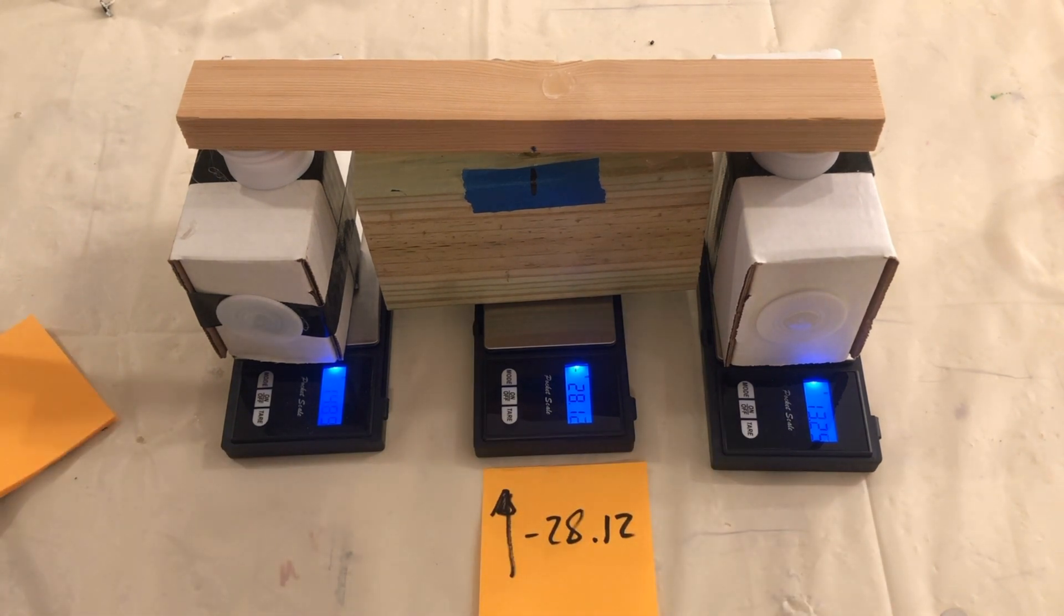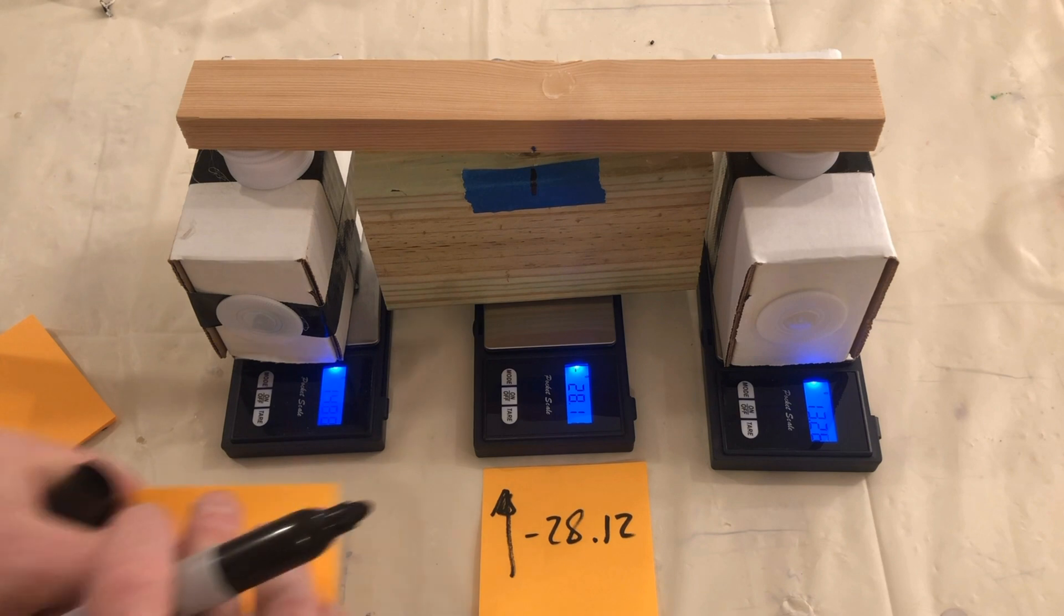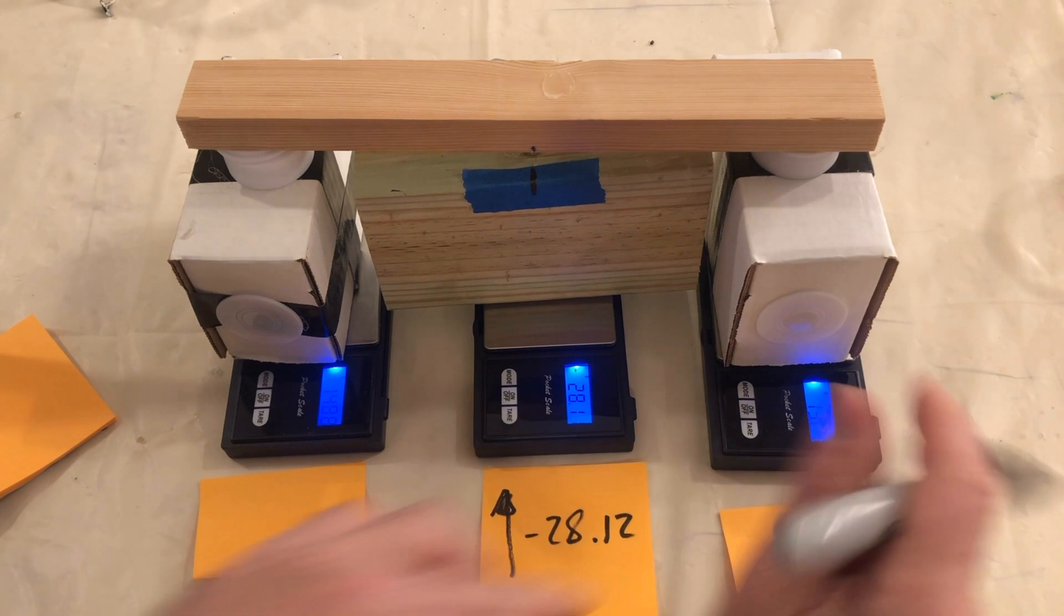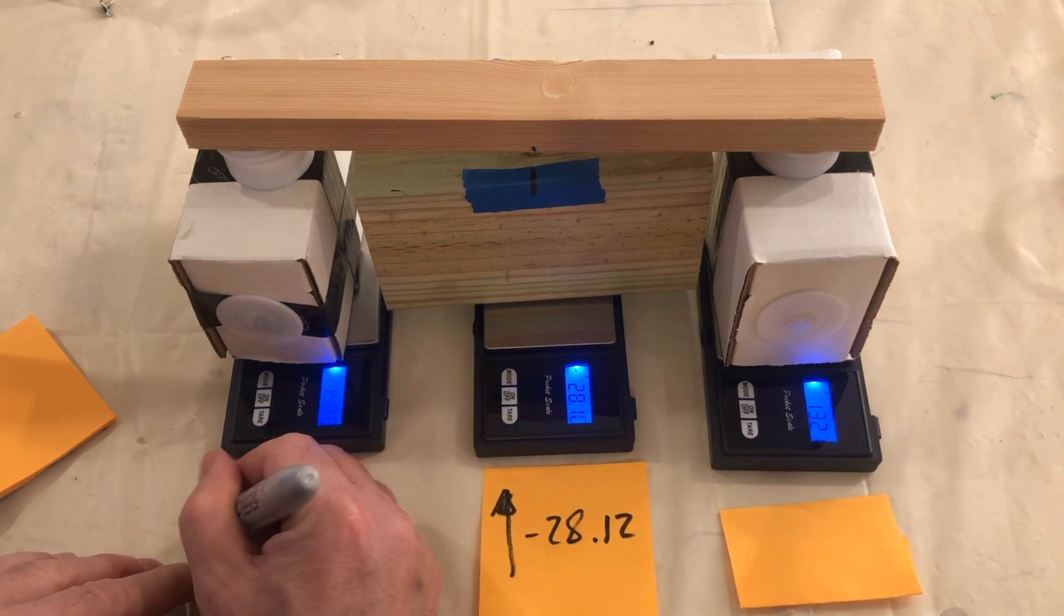The left and right scales have positive numbers reported on them. This indicates that there is an additional downward force on the beam that is being distributed across both these scales.